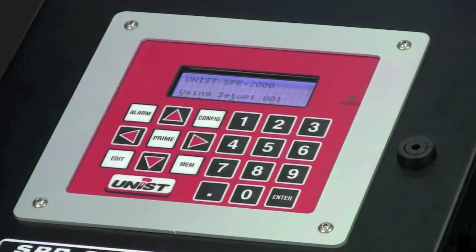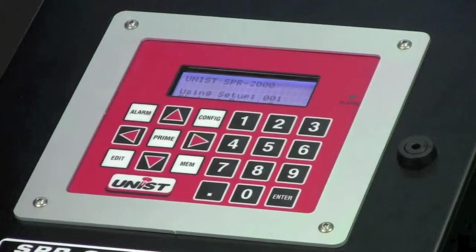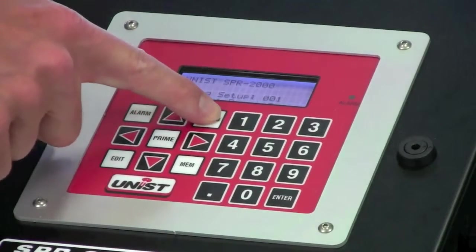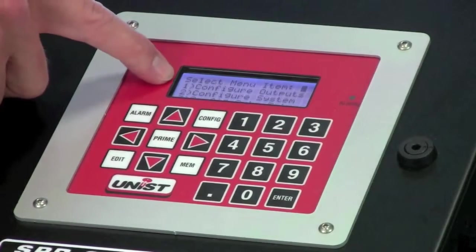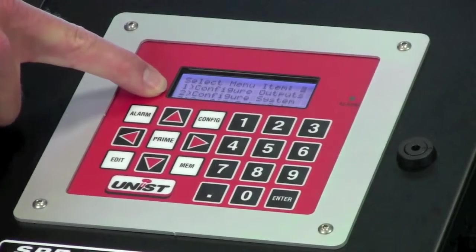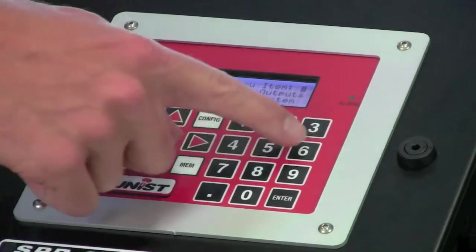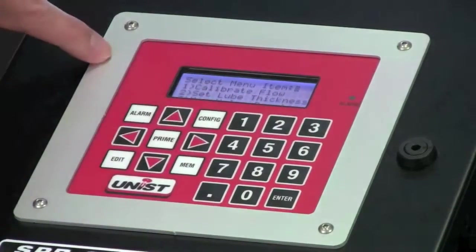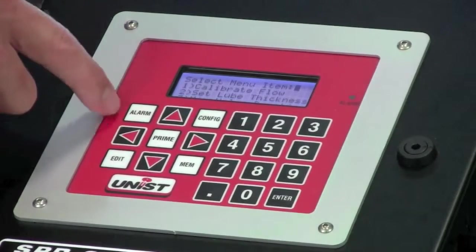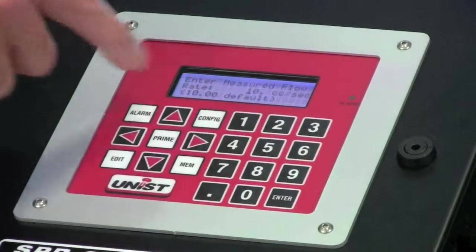Now that we've measured our flow rate of our fluid, we need to enter it into the SPR2000 system. We do that by pushing the config button. And then as you look at the menu options here, option number three is config auto setup or configure auto setup, so we'll enter number three. And then the next menu, the first option is calibrate flow, option number one. So we'll push number one.